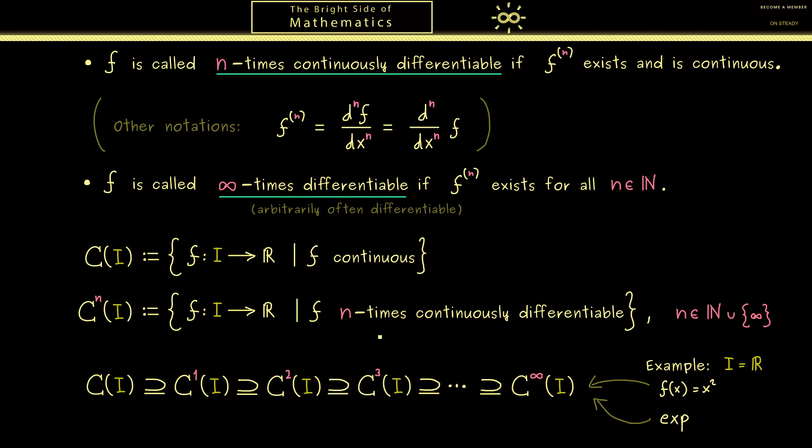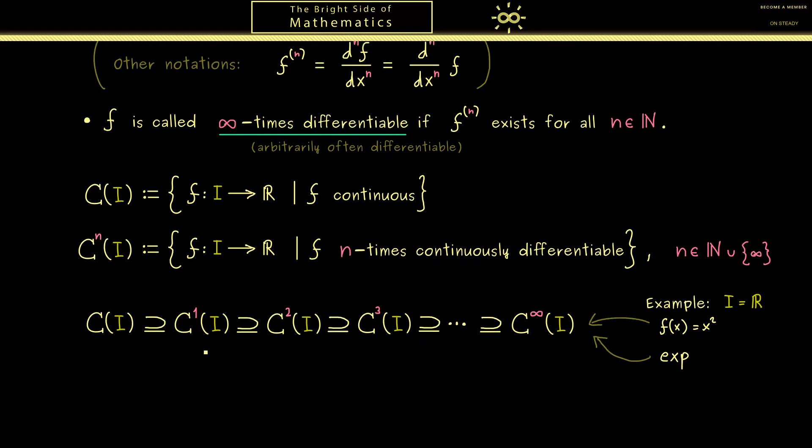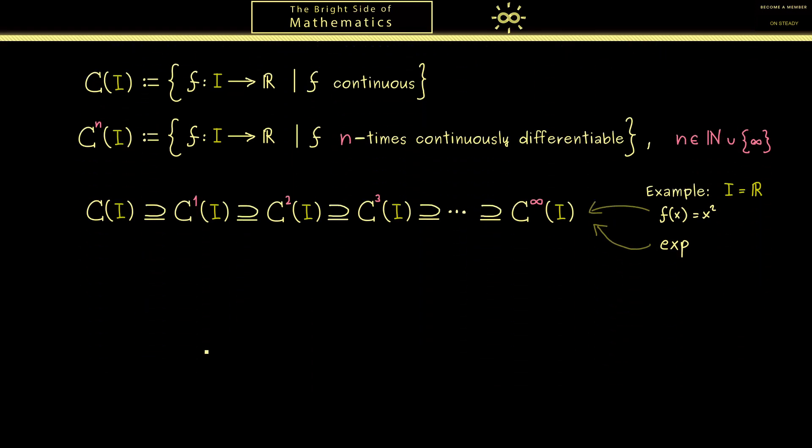Let me show you how we can use the higher derivatives with the next proposition. This is something you might have already applied but now I also want to prove it here. The claim is that for function f defined on an interval we find a sufficient condition for a local maximum and minimum. We already know for a differentiable function we have a necessary condition for having a local maximum or minimum at an inner point of the interval. Namely we have proven that the local extremum at x★ implies that f' is 0.